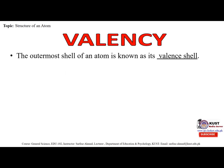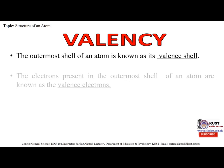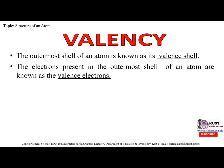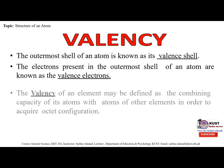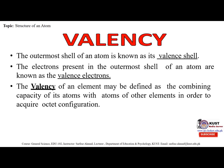What is valency? The outermost shell of an atom is known as its valence shell, and the electrons present in the outermost shell are known as valence electrons. The valency of an atom may be defined as the combining capacity of an atom with atoms of other elements in order to acquire an octet configuration. For example, the valency of hydrogen is 1.